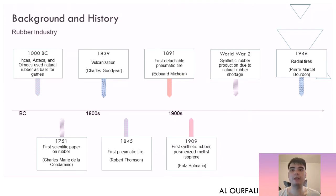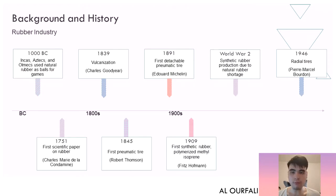In 1839, the vulcanization method was discovered by Charles Goodyear. In 1845, the first pneumatic tire was made by Robert Thompson. In 1891, the first detachable pneumatic tire was made by Edouard Michelin. In 1909, the first synthetic rubber was polymerized by Fritz Hoffmann. During World War II, synthetic rubber production increased due to natural rubber shortages. In 1946, radial tires were developed by Pierre Marcel Faure.